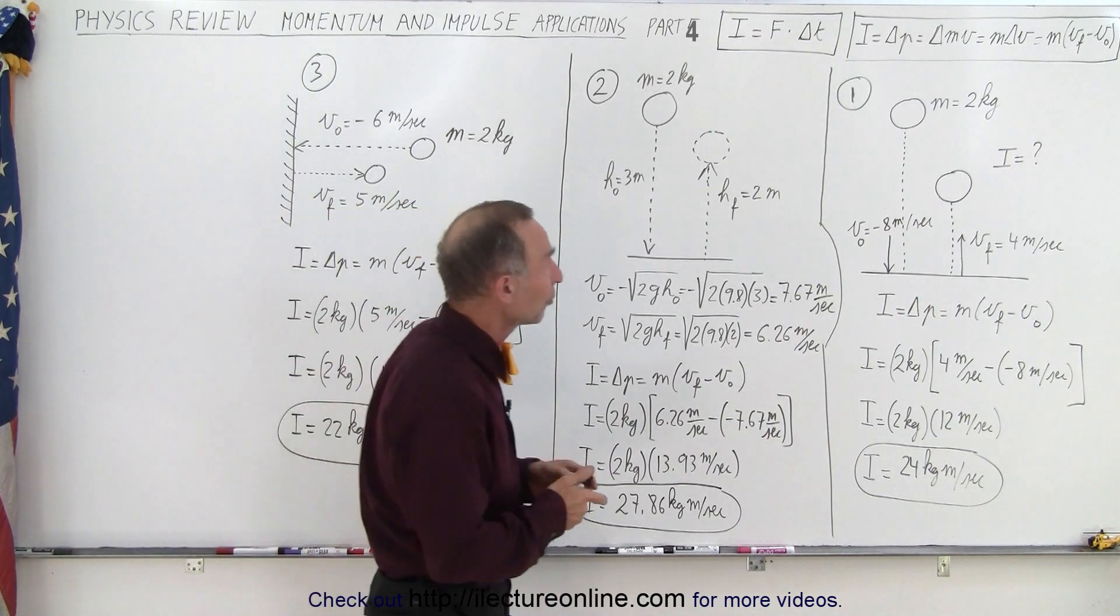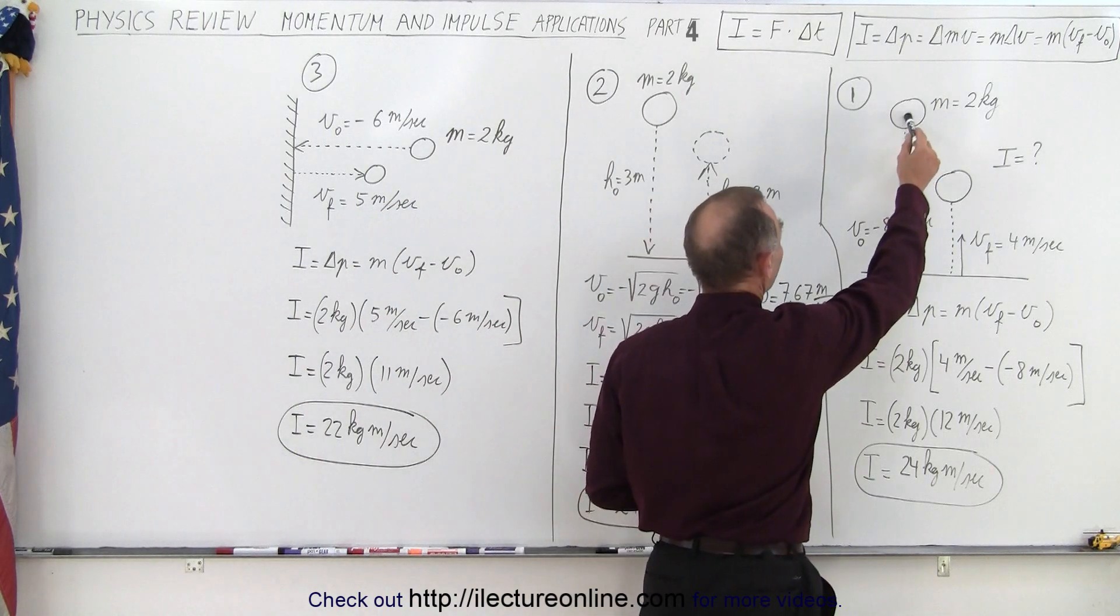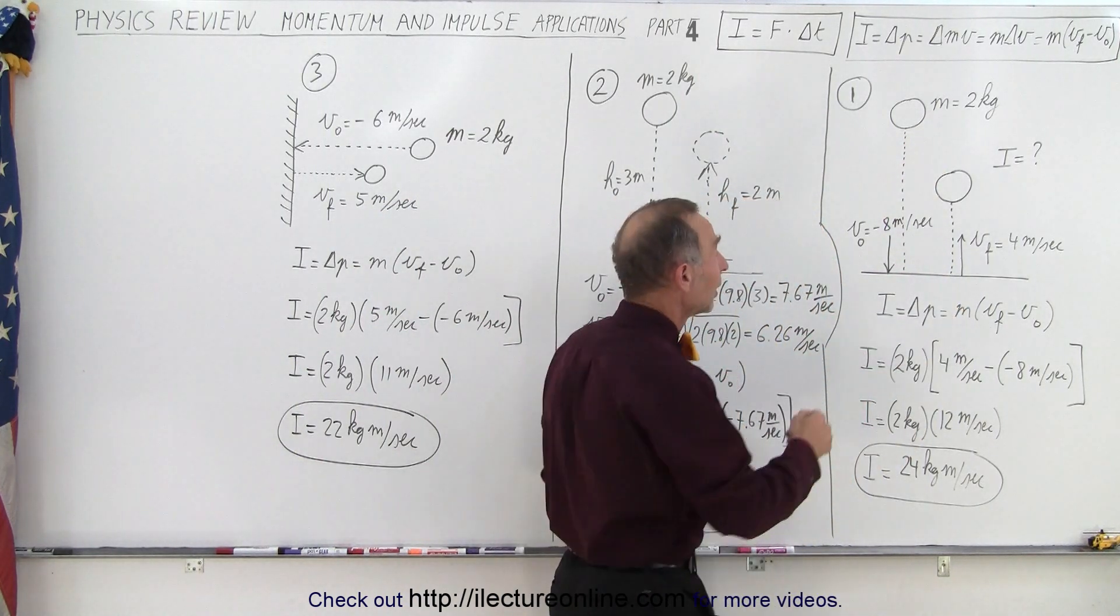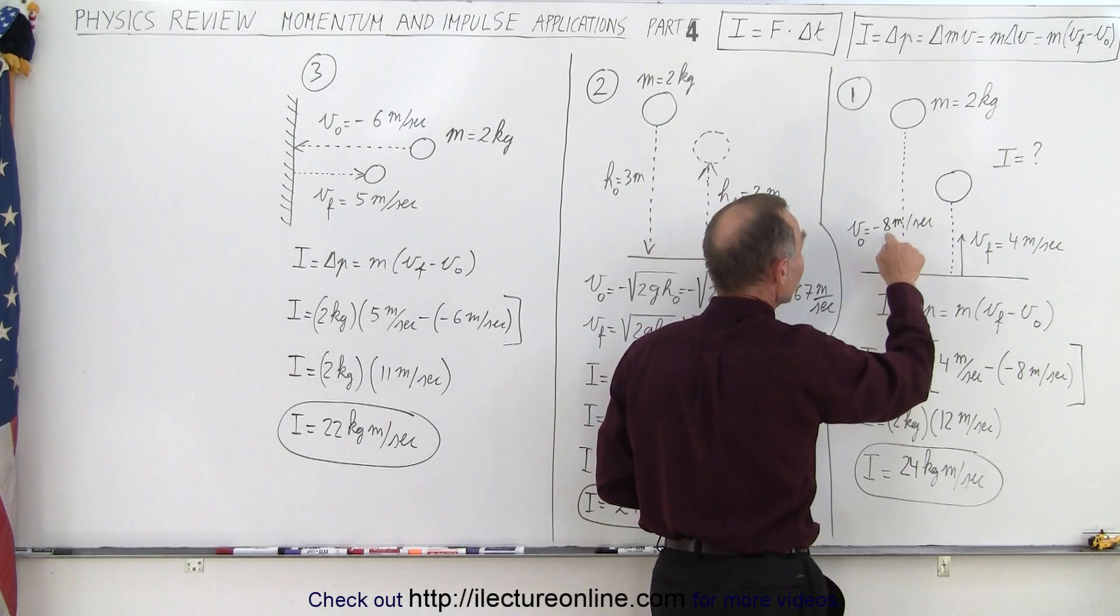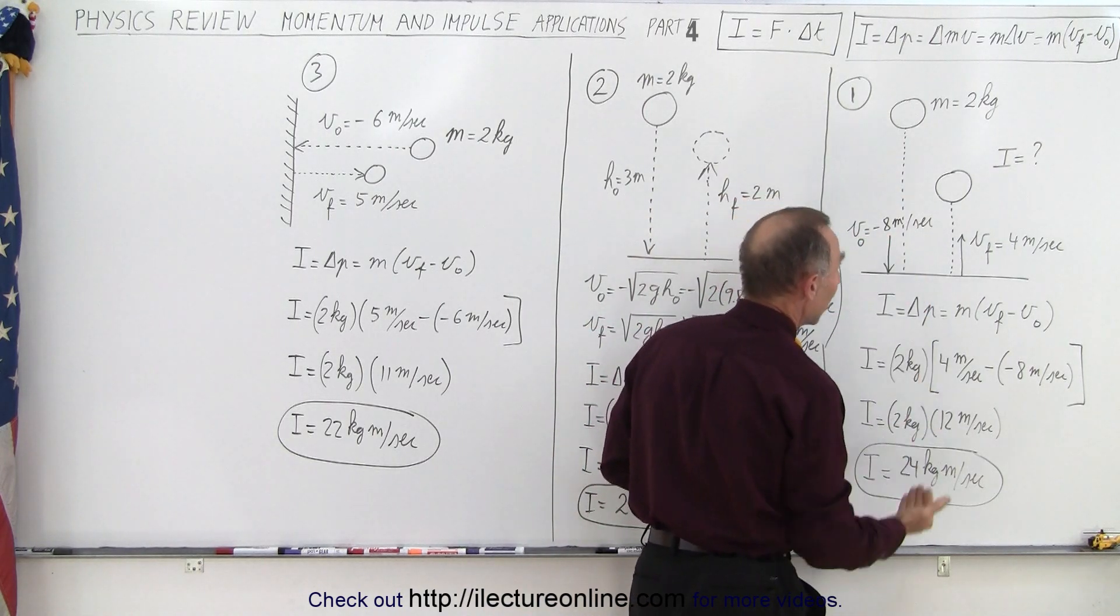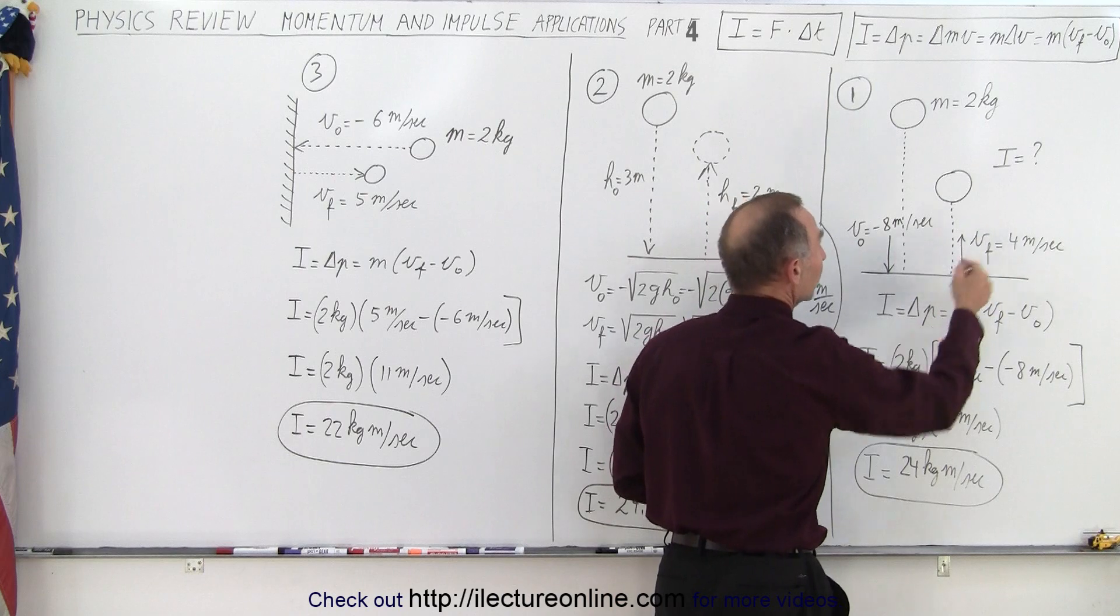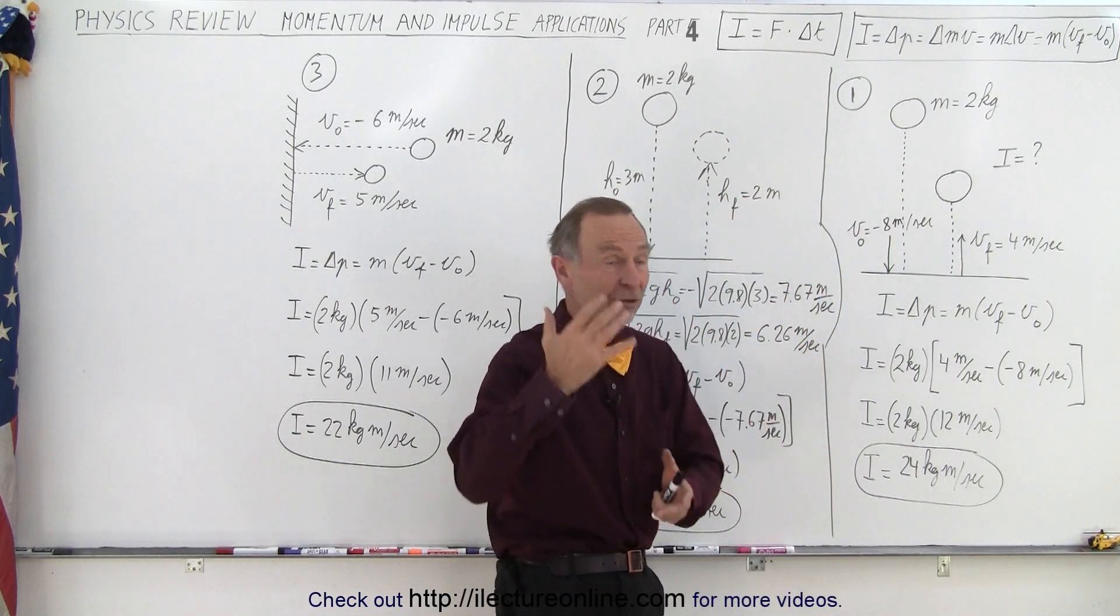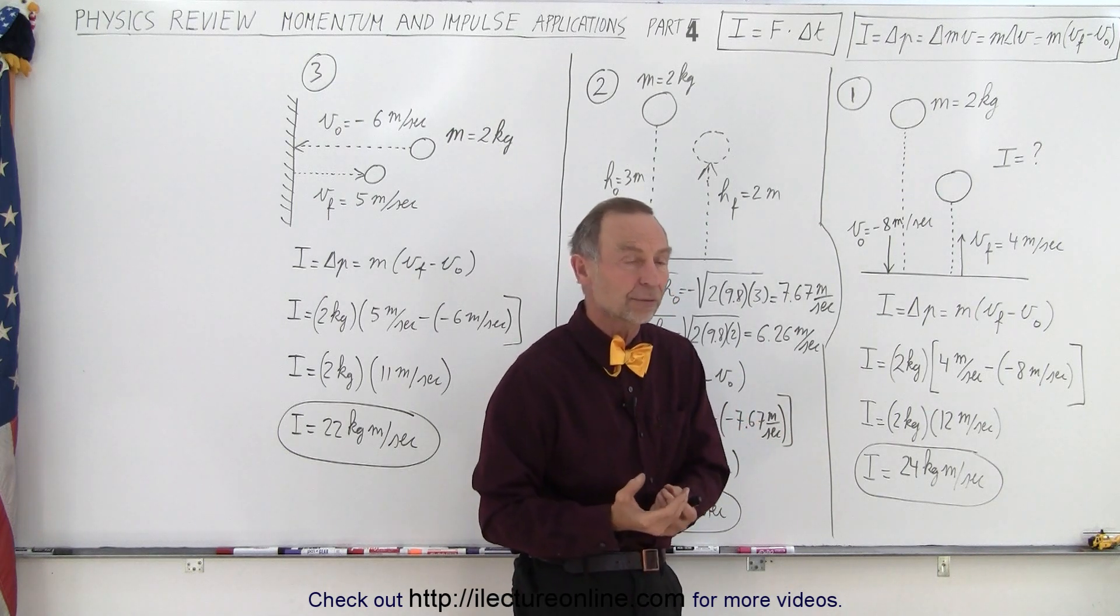So here we have three examples, one where we drop a ball from a height. Well, we don't know what the height is, but we do know that when it strikes the ground it's moving at minus eight meters per second, and when it leaves the ground it's moving at positive four meters per second. Why aren't the velocities the same but in opposite directions? Because some energy is lost in the collision.